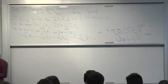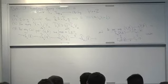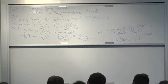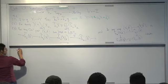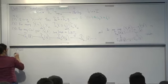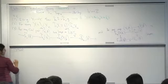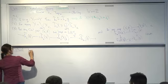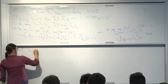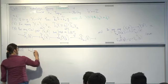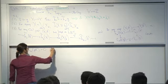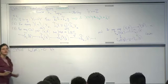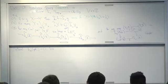Optionally, you can put in a dimension axiom. This is very optional. The dimension axiom says that h̃ₙ of a point is zero for all n. This is very optional because once you put that in, there's only one such homology theory.